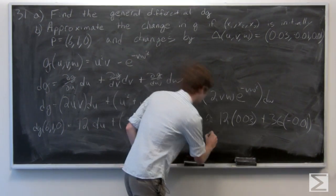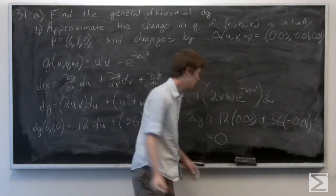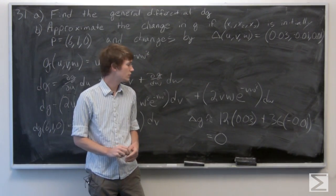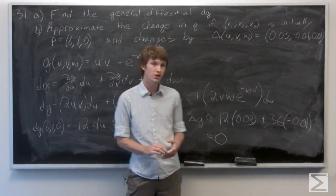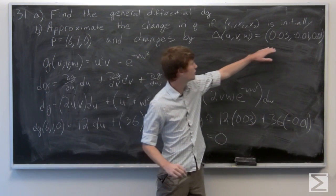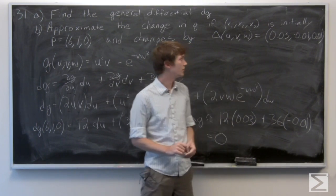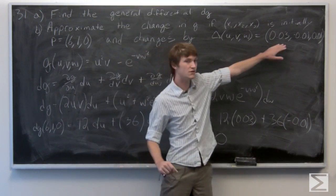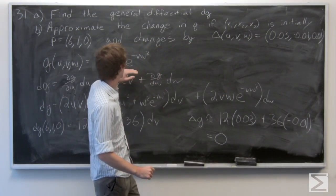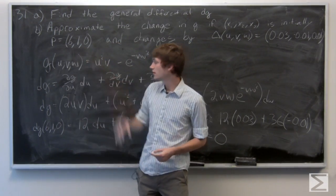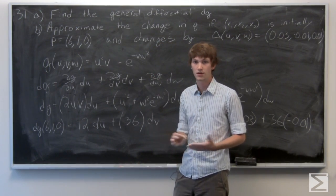And we get that the result is 0. So the approximate change in g if you change u v w with respect to this vector and at the point p is expected to change by nothing.